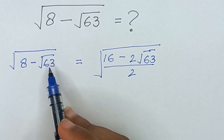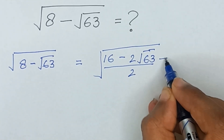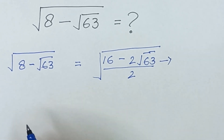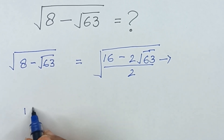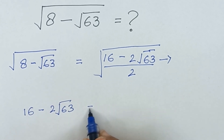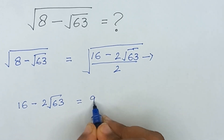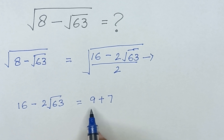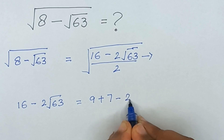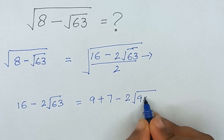So first of all we will solve the term 16 minus 2 times square root of 63. Here we have 16, and 16 is the same as 9 plus 7, because 9 plus 7 will again become 16. And 2 times square root of 63 — here 63 is the same as 9 multiplied by 7.